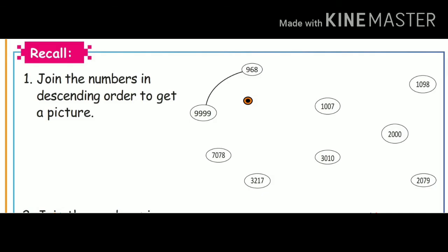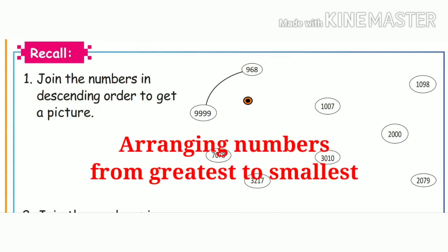This unit starts from page number 24 — numbers beyond 10,000. First there is a recall activity. The question is: join the numbers in descending order to get a picture. Descending order means arranging numbers from greatest to smallest.